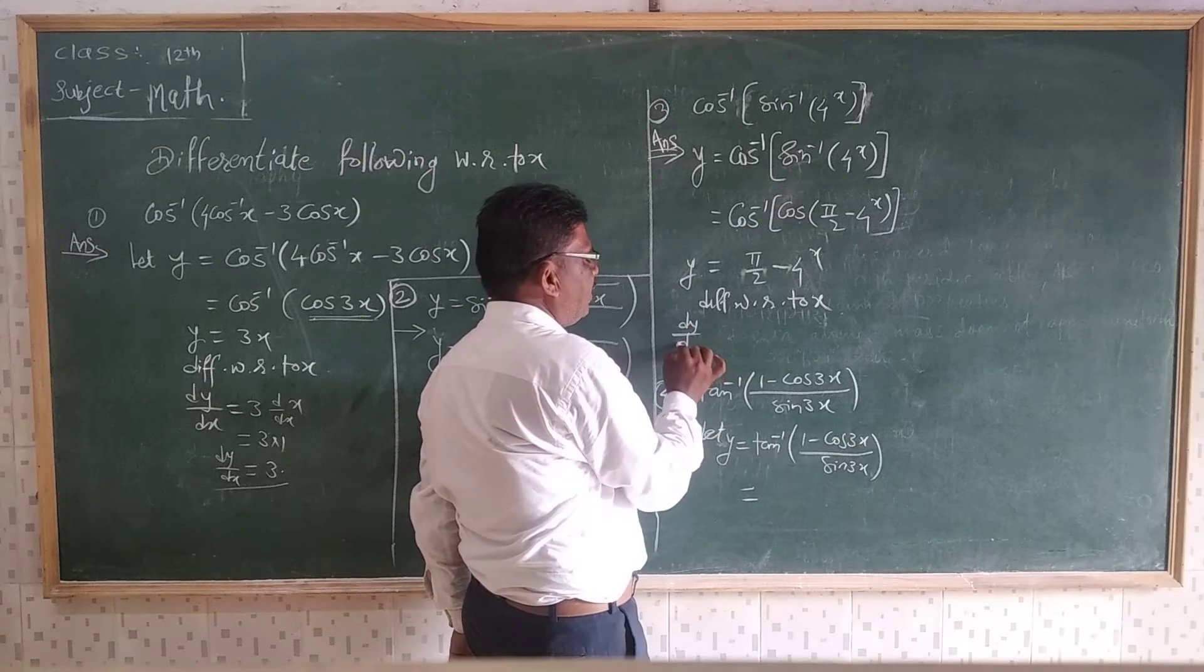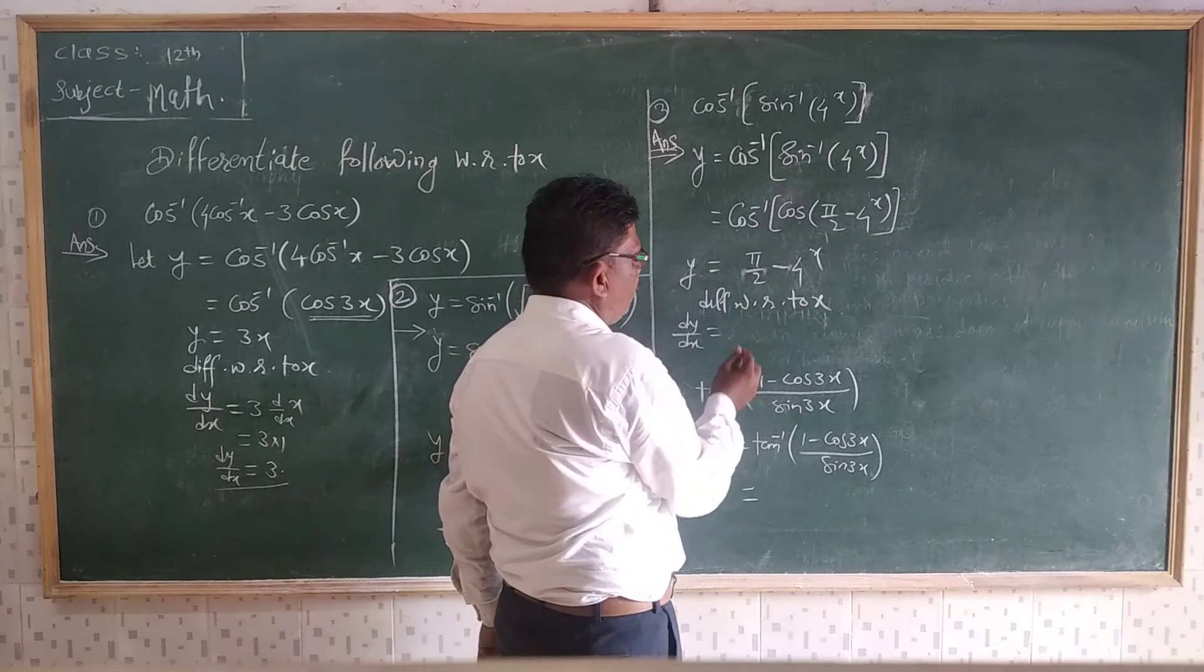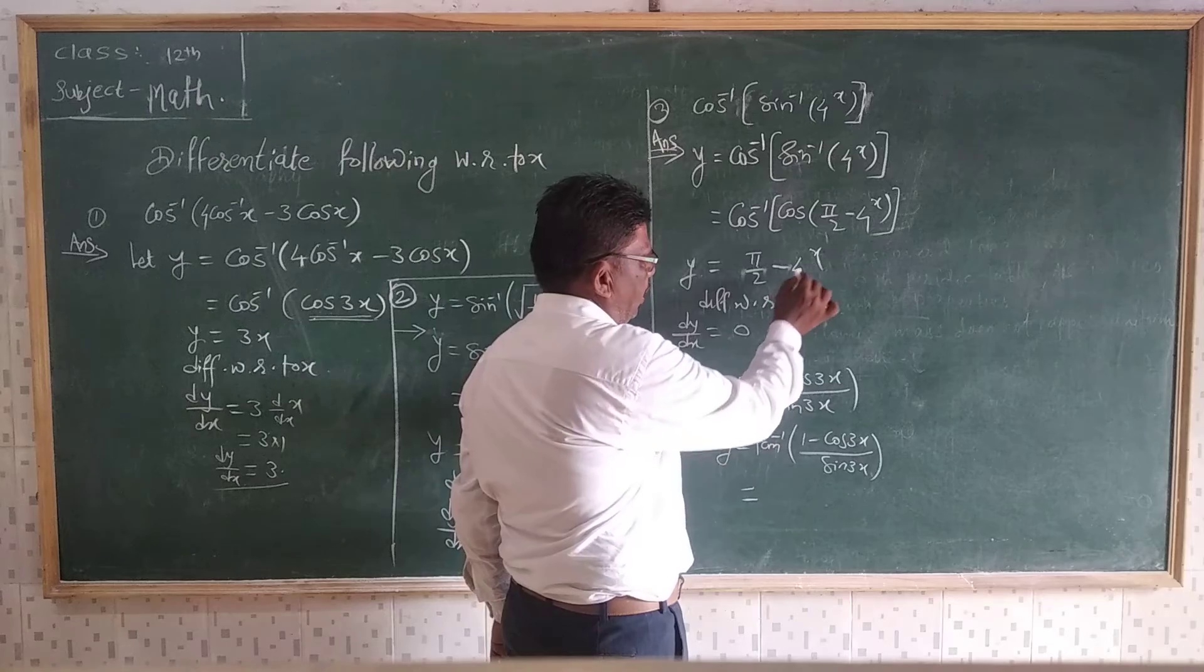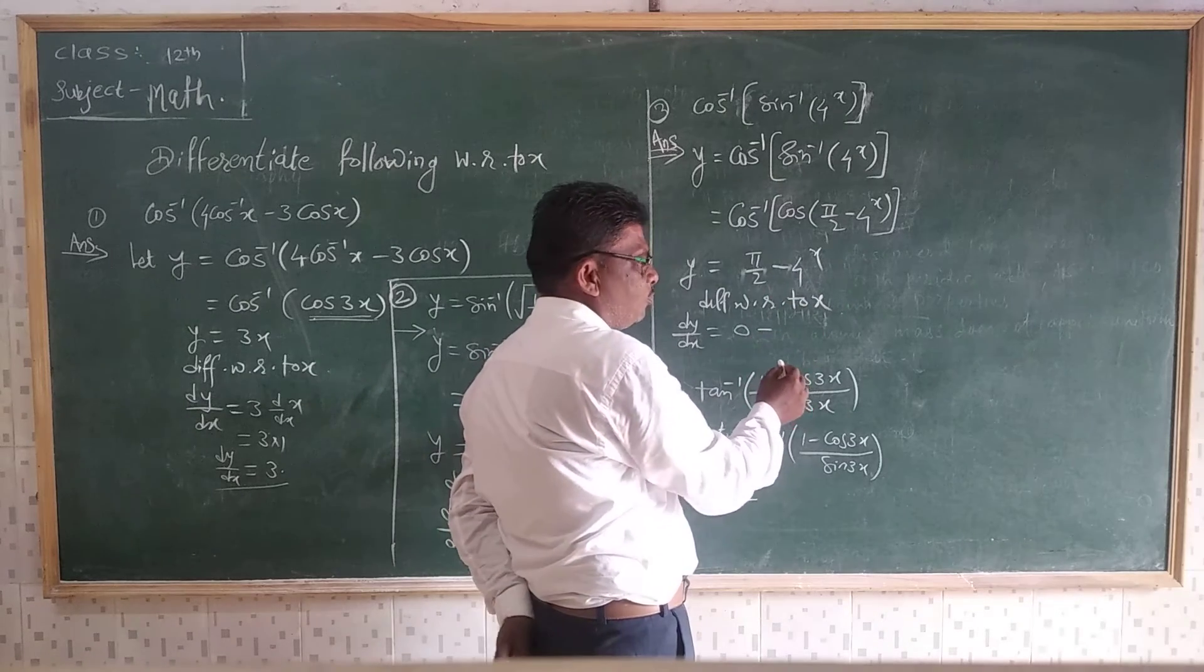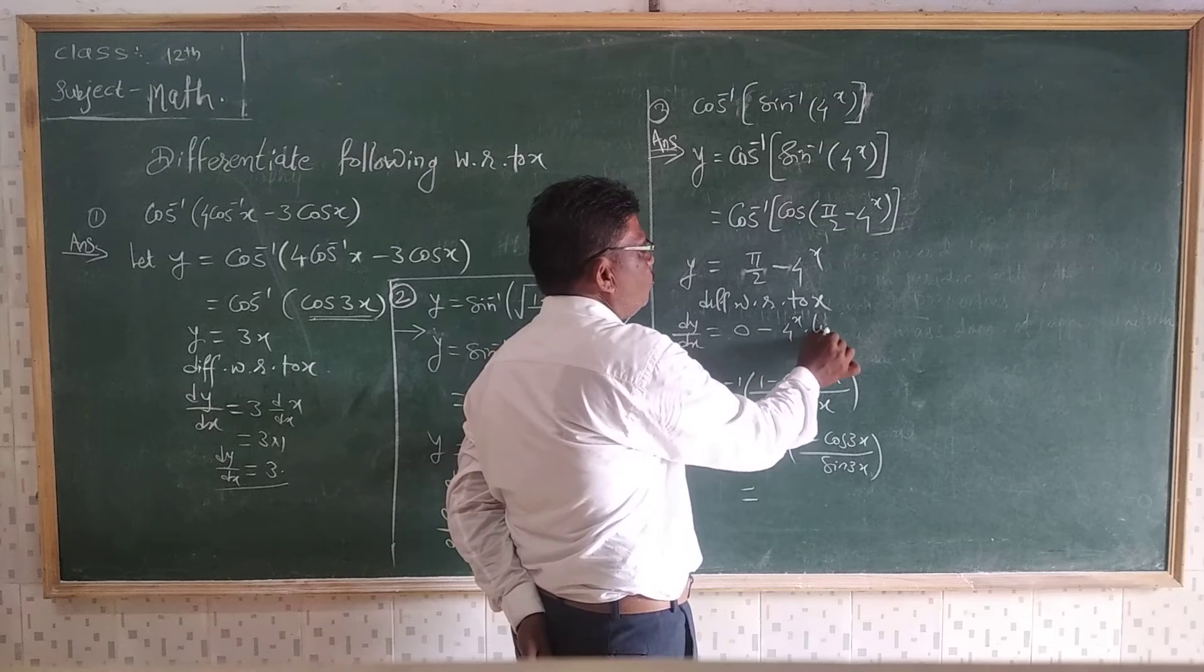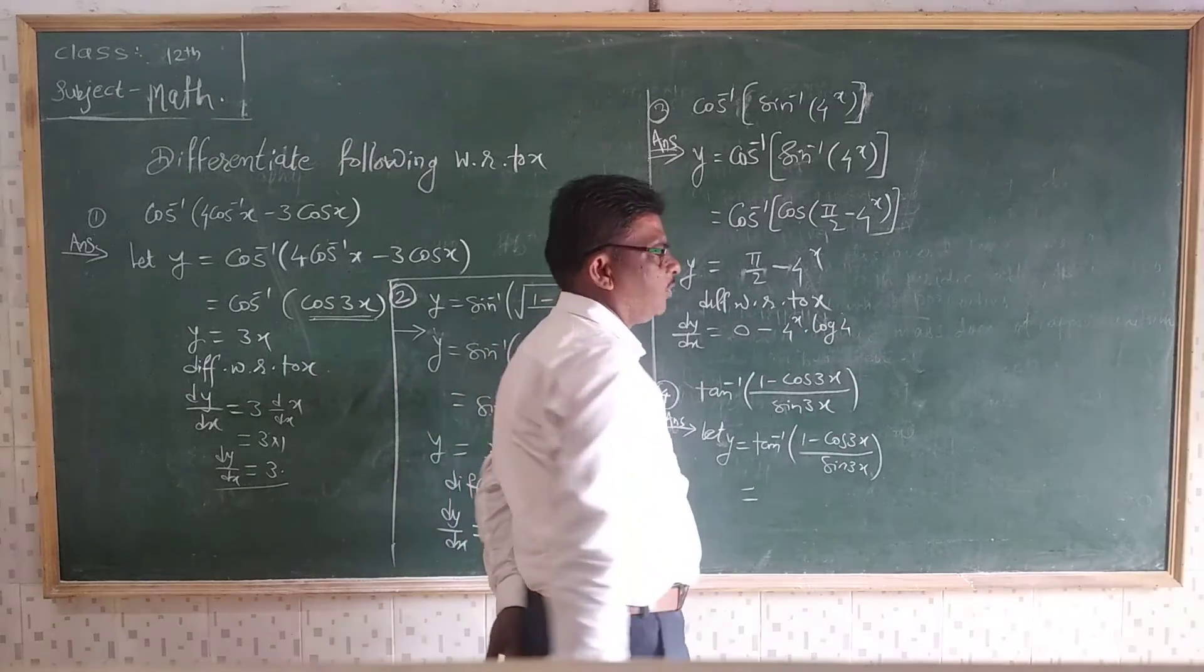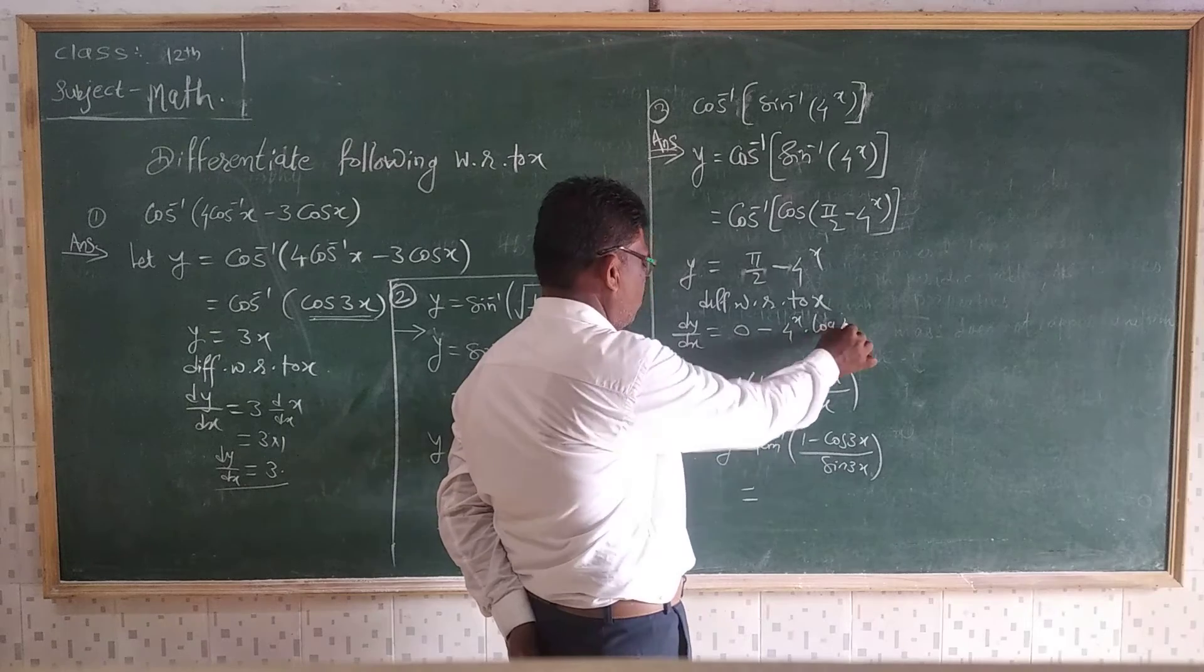That is dy/dx is equal to, derivative of π/2 is 0 and derivative of 4^X. a^X is a^X into log a, that is 4, the constant.